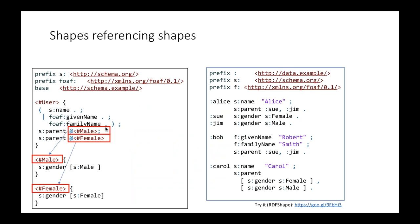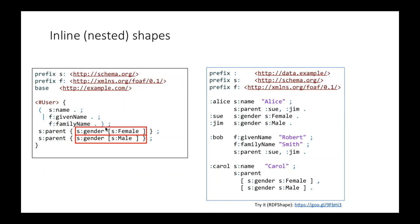We've seen shapes referencing shapes — for instance, user had a schema:knows of another user. Here we have an example where somebody has a biological parent who matches the male shape and another biological parent who matches the female shape. In the schema on the left, we have two s:parent properties with references to these named shapes. If you're not making other references to the male and female shapes, you can just put them inline to make the schema more compact.